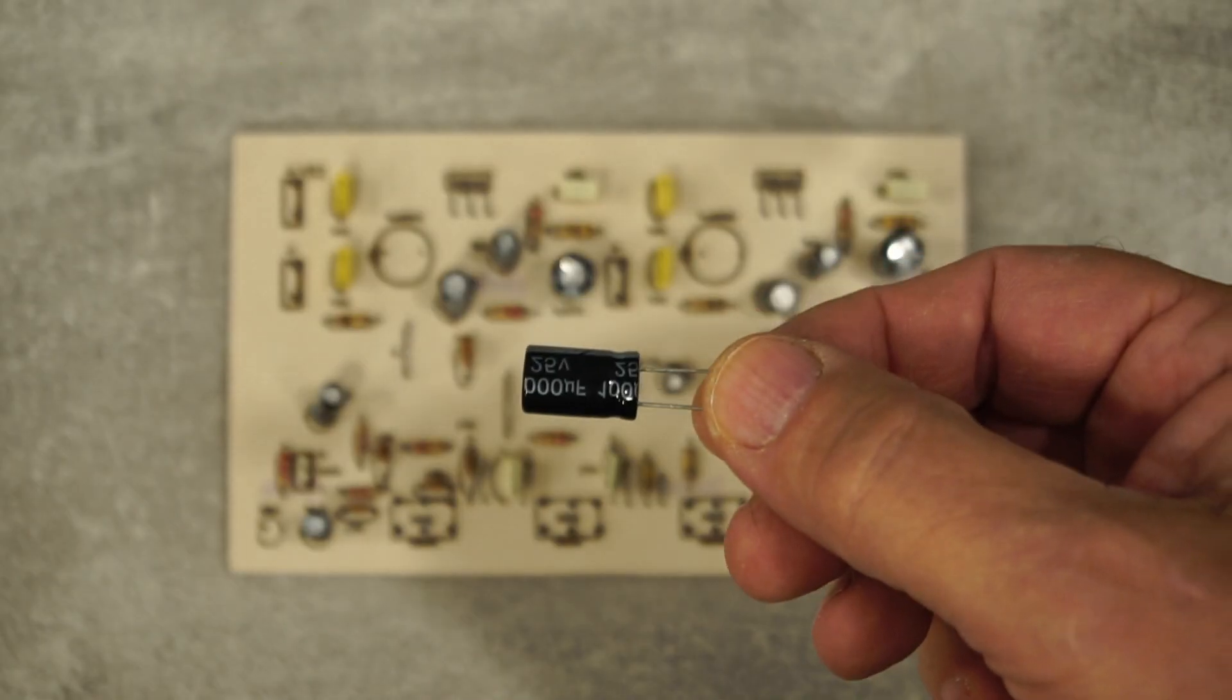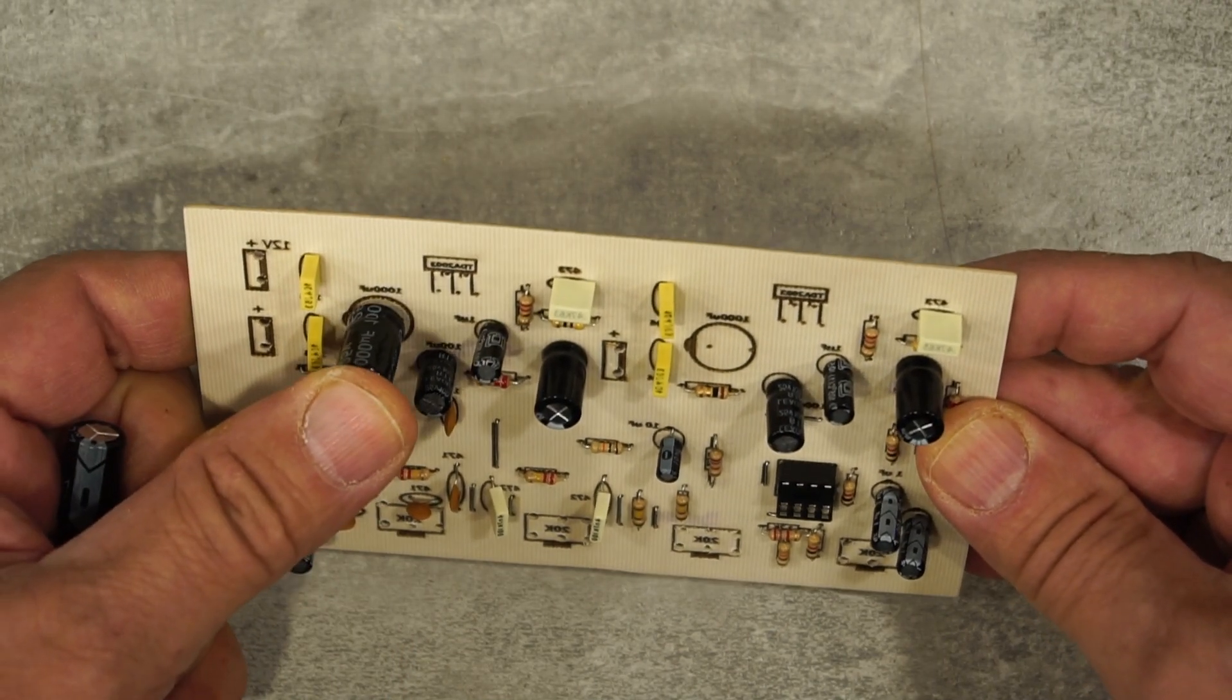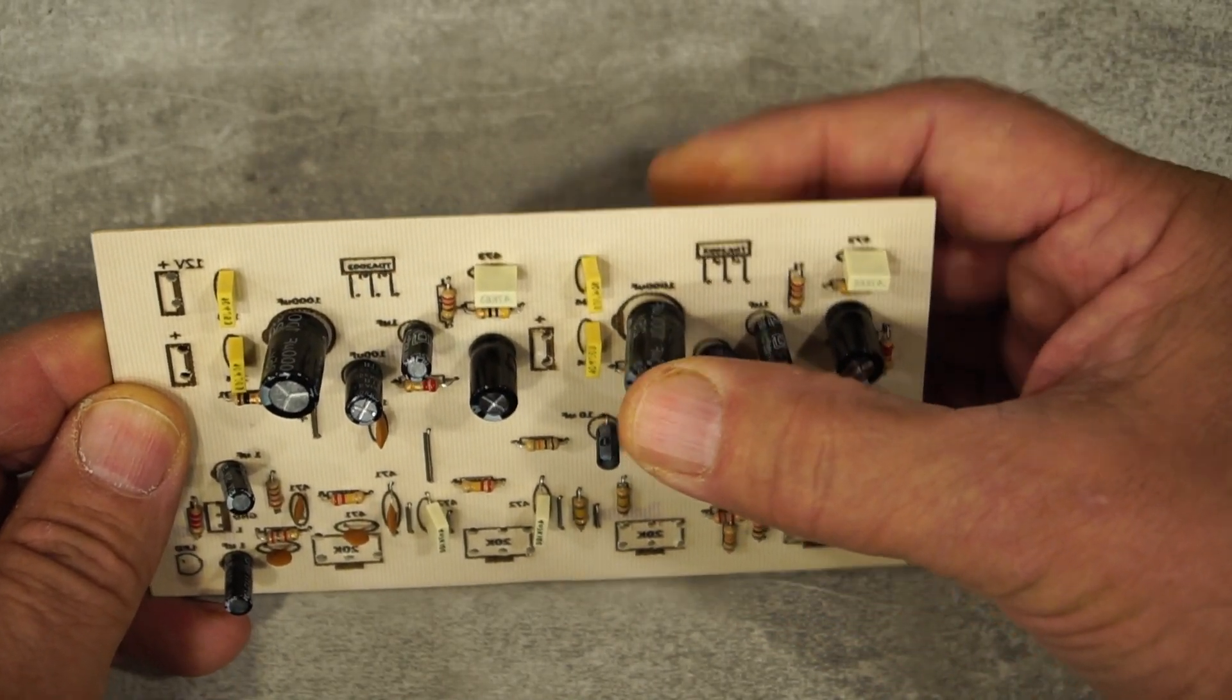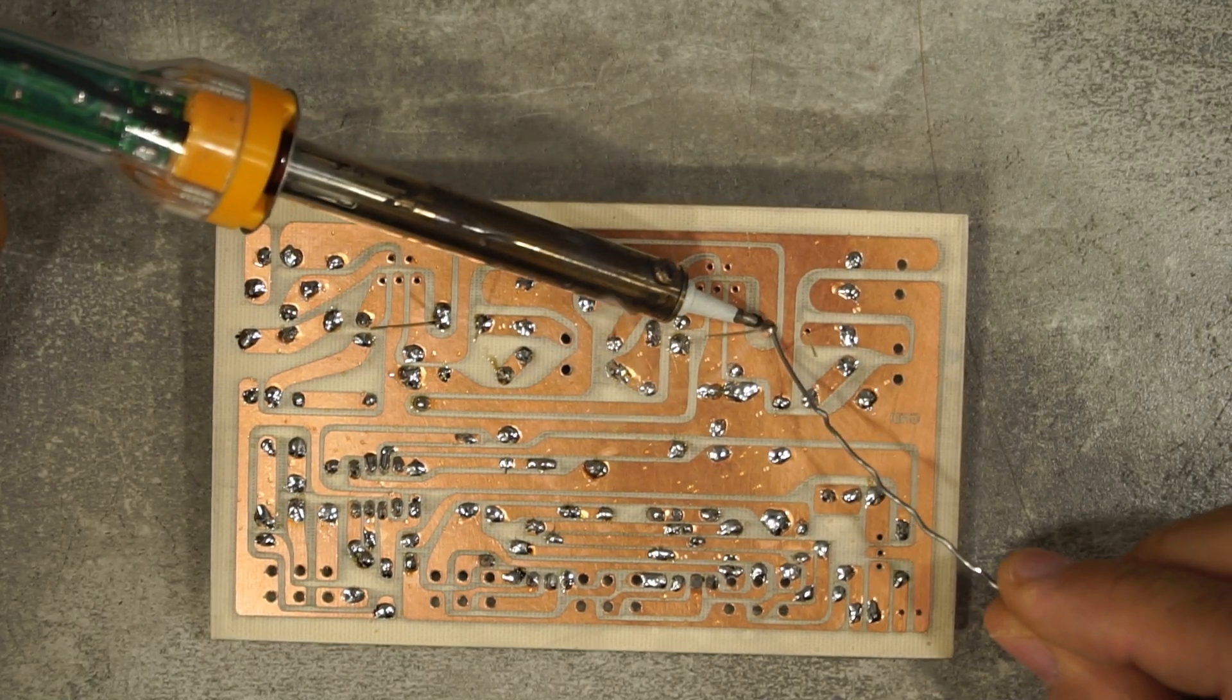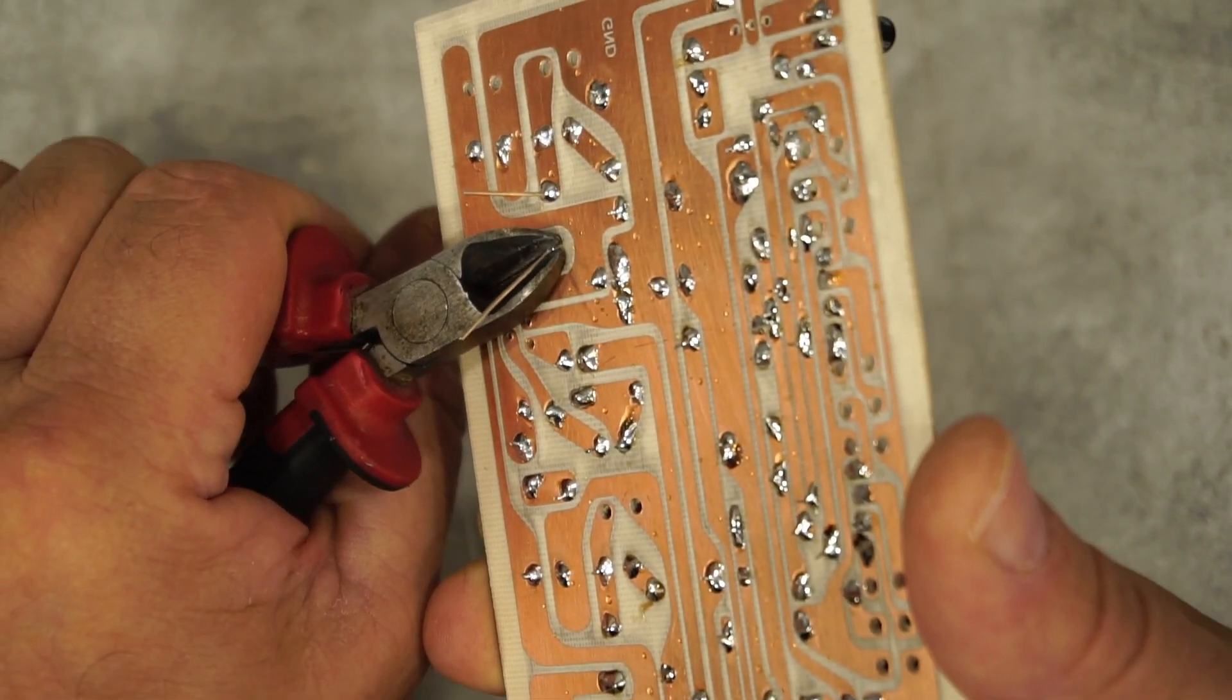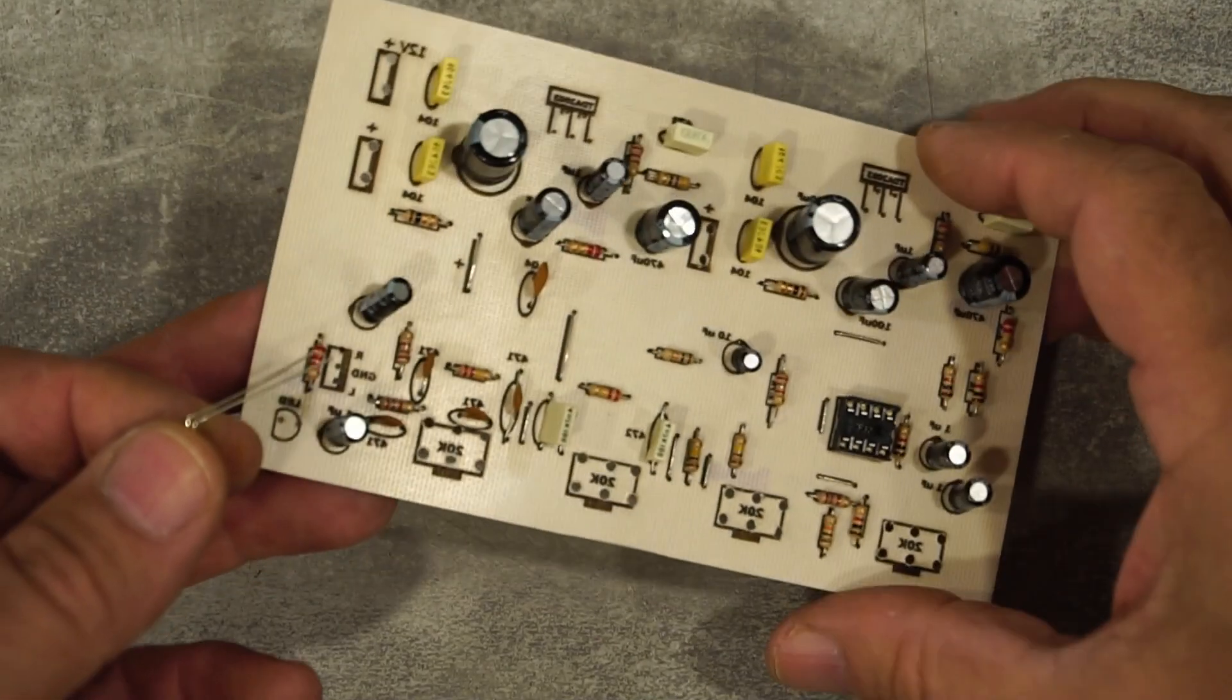I place the 1000µF electrolytic capacitors. I solder them. The red LED is an indicator for the powered on amplifier.